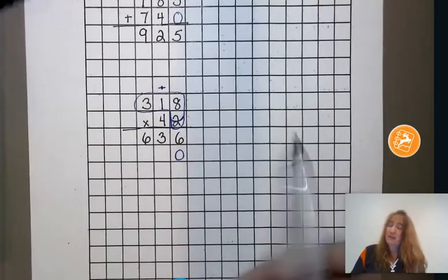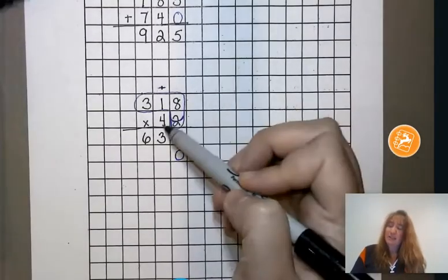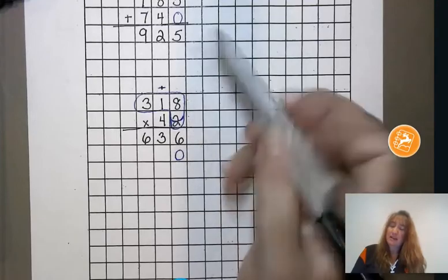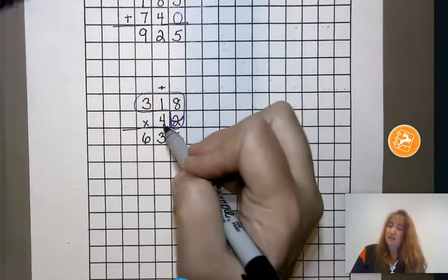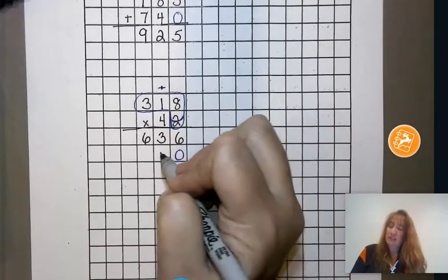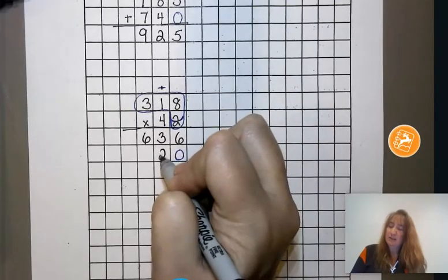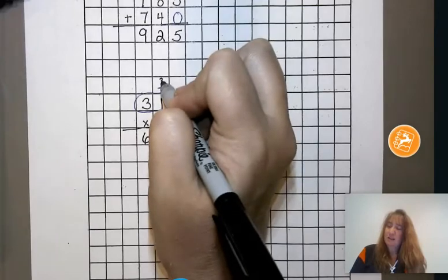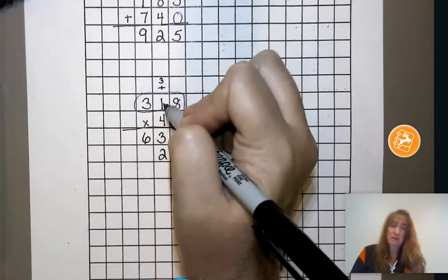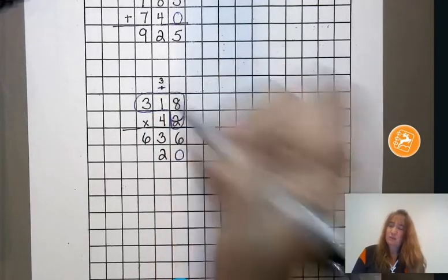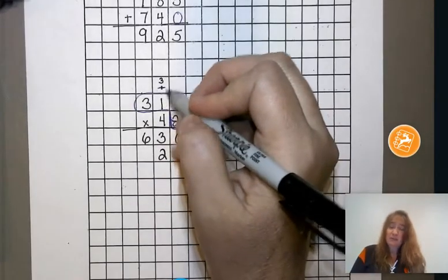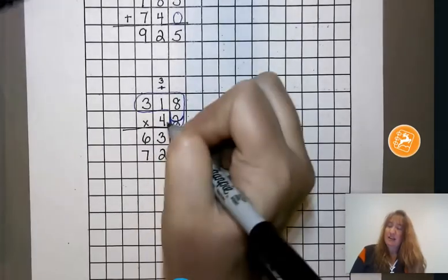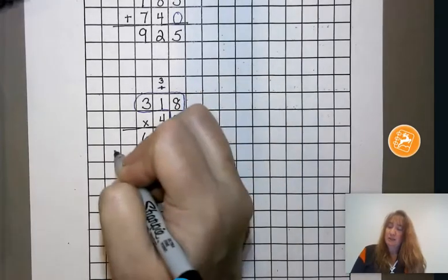So now what I'm going to work with is I'm going to work with this 4 here. And once again, I'm going to start from the back of the head and work towards the eyes. So let's go ahead and take 4 times 8 is 32. We're going to split that product. I'm going to carry the 3 above the next number I'm going to work with. 4 times 1 is 4 plus 3 is 7. And 4 times 3 is 12.